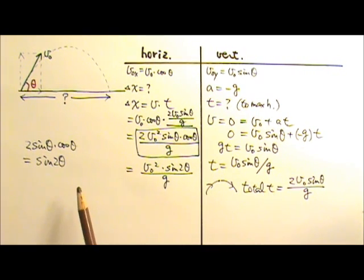That will make it V₀ squared times sine 2 theta divided by G. Don't worry. I don't think you need to memorize this trig equation for the AP Physics exam.